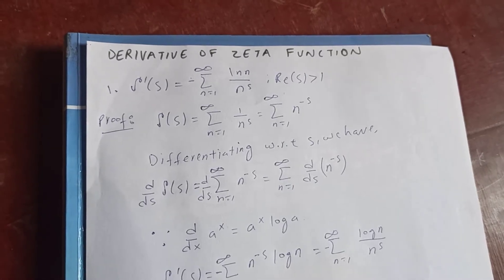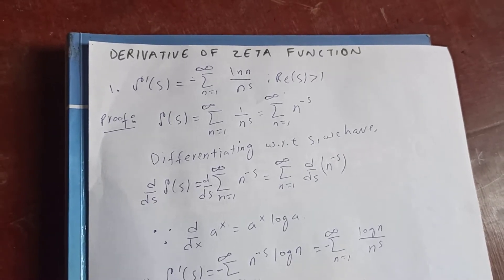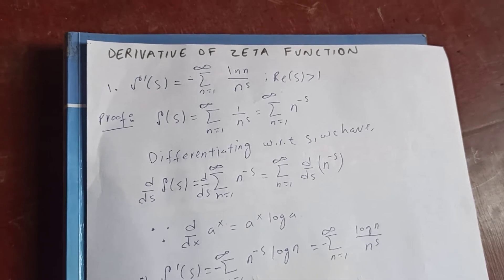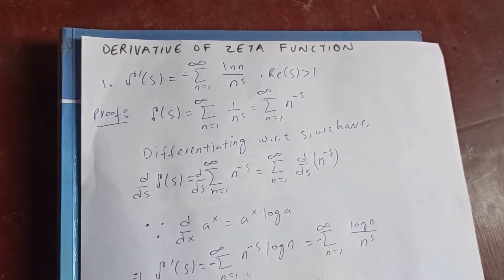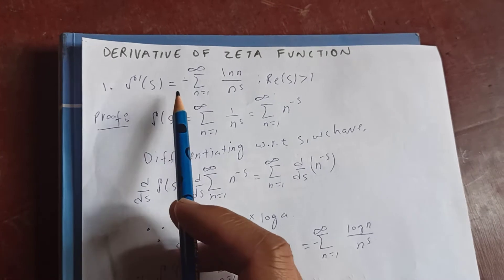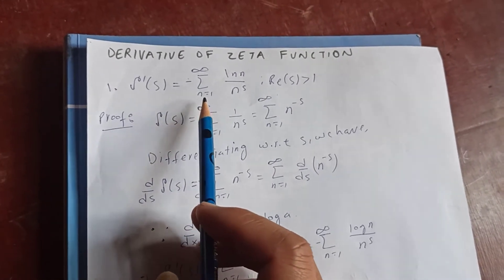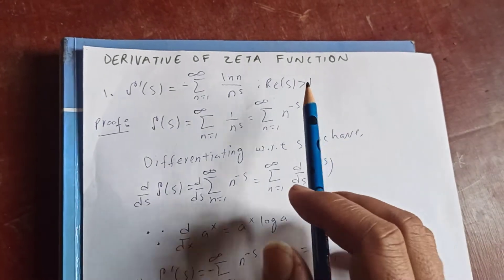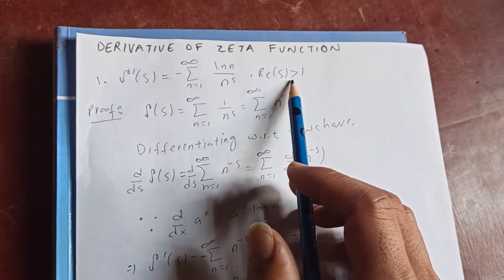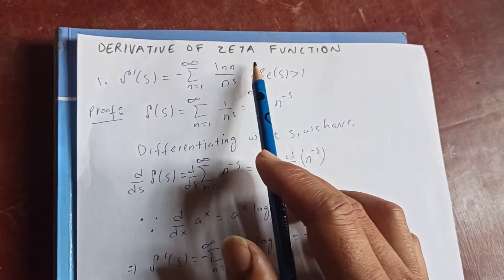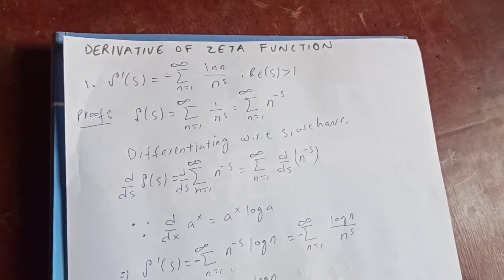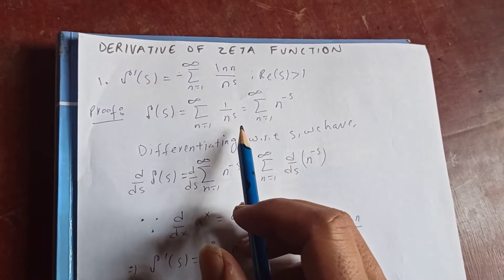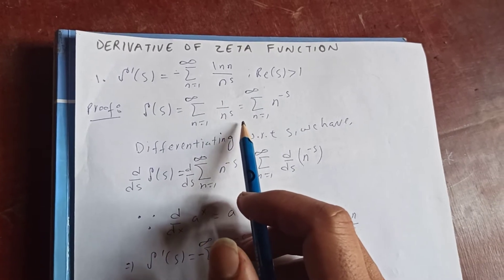Thanks for watching my video today. Let's evaluate the derivative of the zeta function — the Riemann zeta function. We know that zeta of s is the sum from n equal to 1 to infinity of 1 over n to the s, where the real part of s is greater than 1.